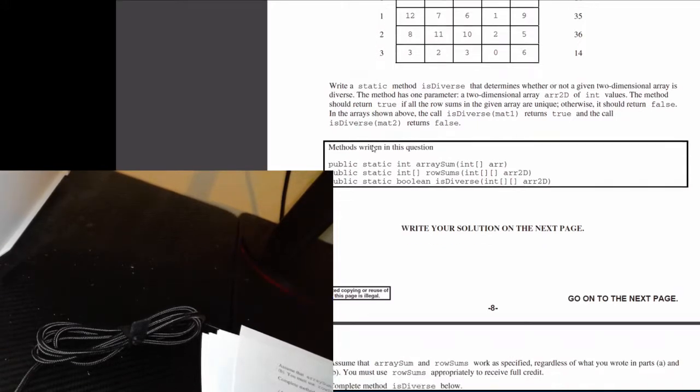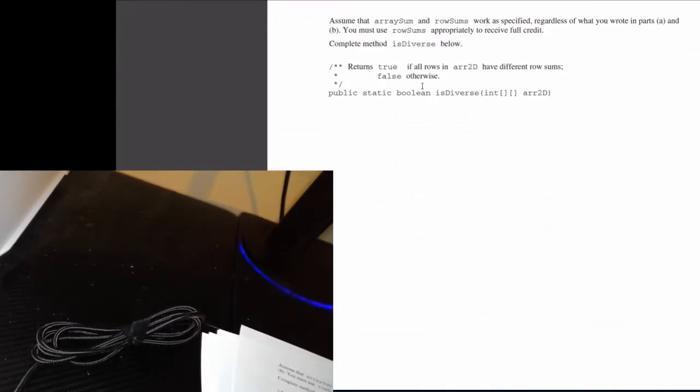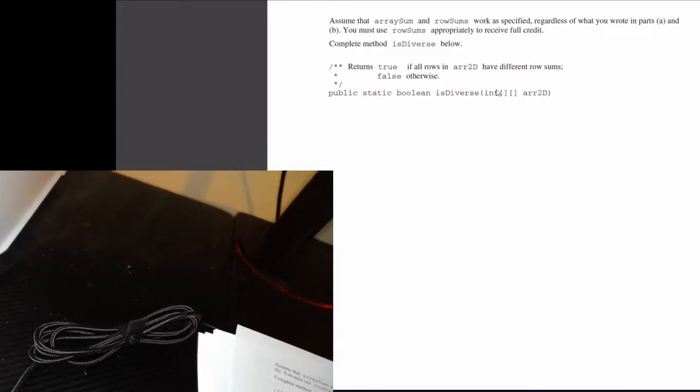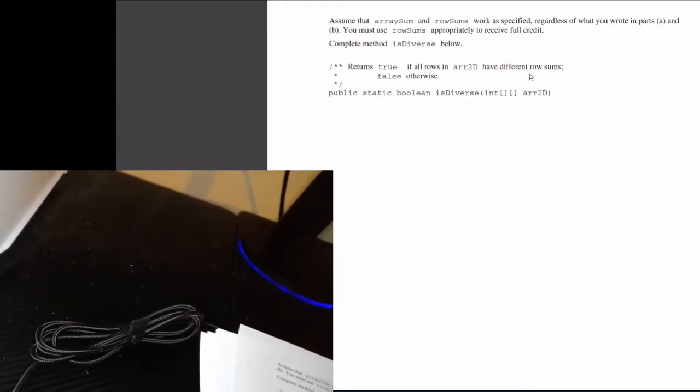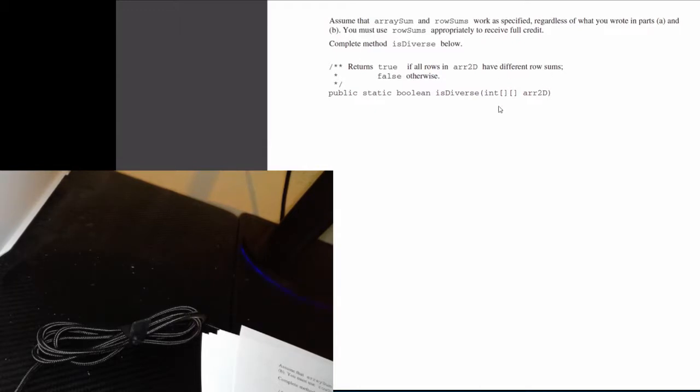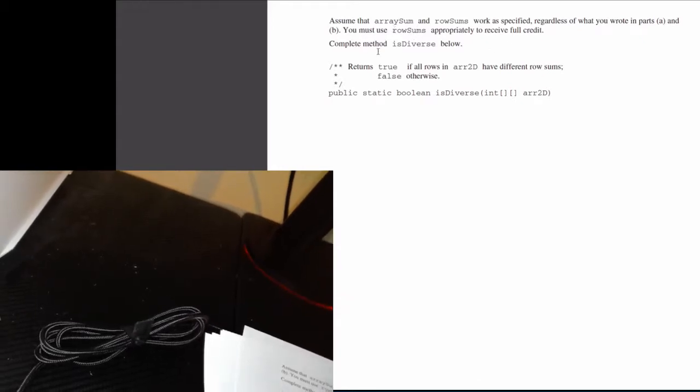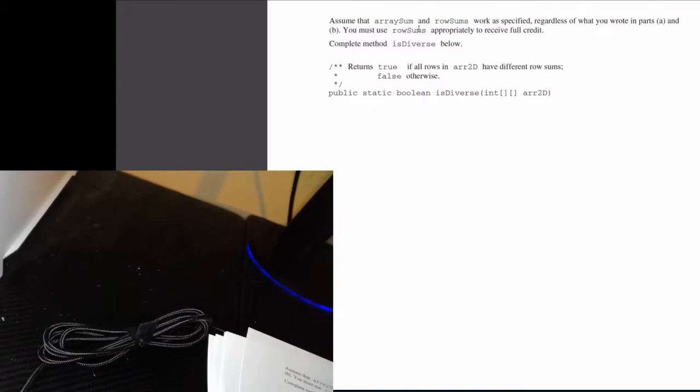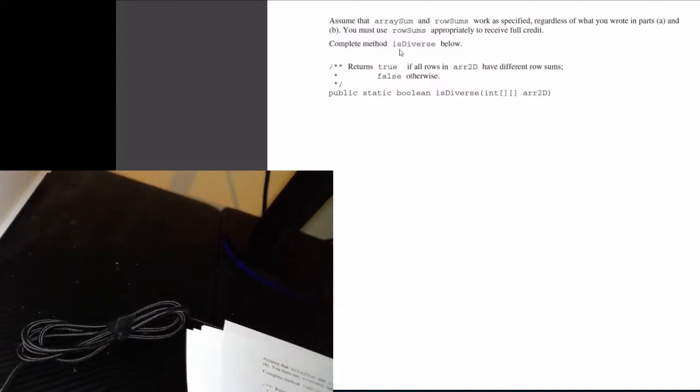They give you a method signature. You are to create this method so that it takes in a 2D array of integers and it spits out true if this 2D array is diverse, false if it is not. Again, we have to use rowSums appropriately in order to get full credit.